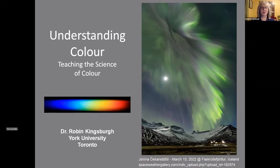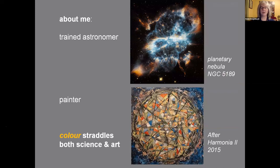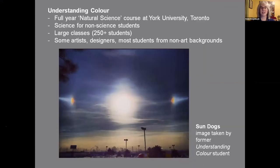A little bit about me: I'm a trained astronomer, I don't do research anymore, but I have a background in spectroscopy. I used to work on objects called planetary nebulae. I'm also a trained painter, and so for me, colour is this great intersection point of science and art. This course, Understanding Colour, came about just having coffee with the chair — who is a physicist, his wife's a painter, very interested in art and science. We thought, wouldn't it be great to do this cross-disciplinary course about colour and try to look at it from as many different viewpoints as possible.